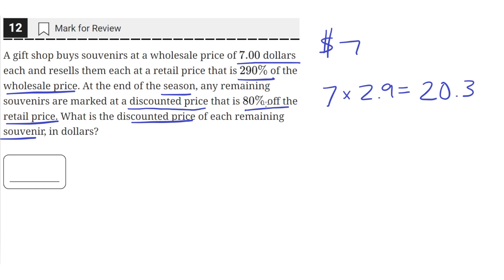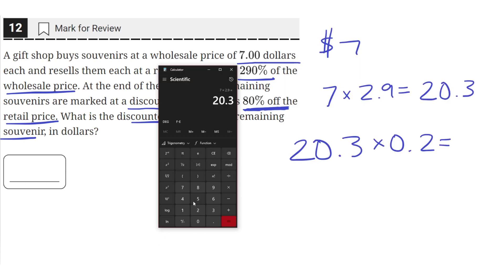At the end of the season, the price is 80% off, so only 20% of the original retail price remains. The retail price is $20.30, but we only keep 20% of it, so we multiply by 0.2. This is an 80% discount. So 20.3 times 0.2 equals $4.06.